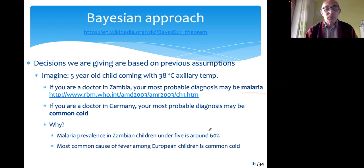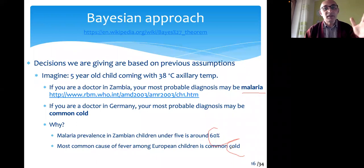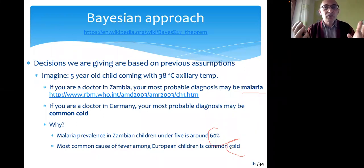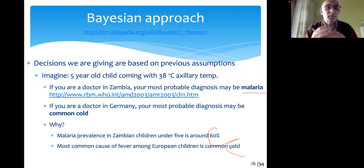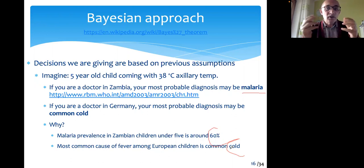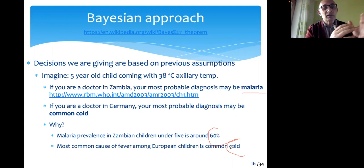That's because of the prevalences. Without considering the prevalence of the condition, without taking into account this pretest probability, this axillary fever measurement actually is not that much useful. Just by looking at the fever, we are not able to conclude — we need the pretest probability.